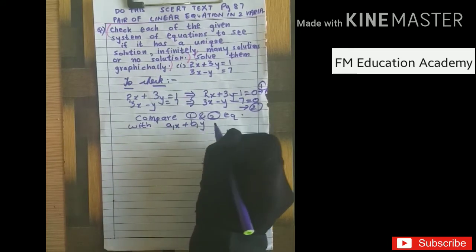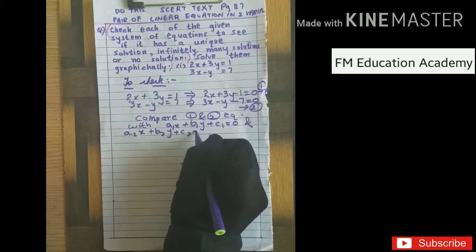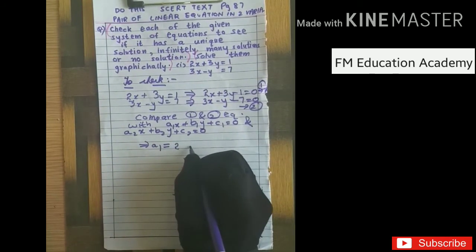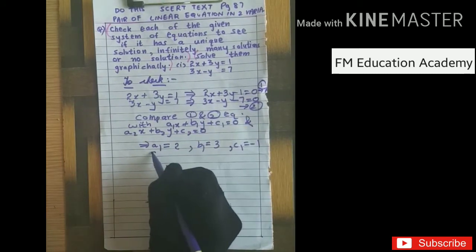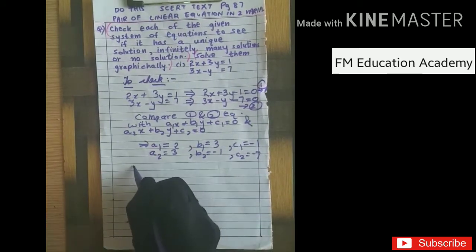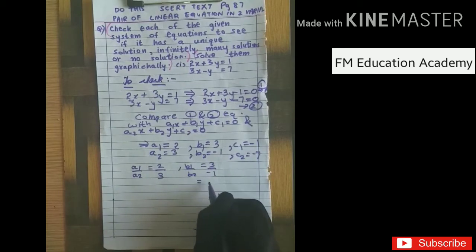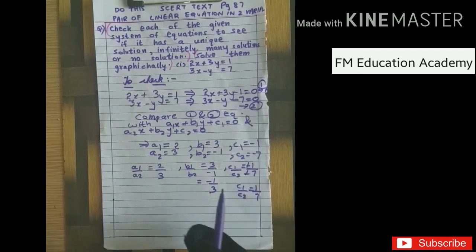Comparing with the standard form: a1 is the coefficient of x in the first equation, so a1 equals 2. b1 is the coefficient of y, so b1 equals 3. c1 is the constant, so c1 equals minus 1. Similarly, a2 equals 3, b2 equals minus 1, c2 equals minus 7. Now, a1 by a2 is 2 by 3. b1 by b2 is 3 by minus 1, which gives minus 1 by 3. c1 by c2 is minus 1 by minus 7, which simplifies to 1 by 7. So all three ratios are unequal.